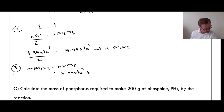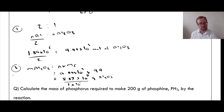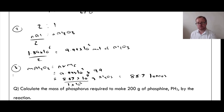Convert to mass using M = N × Mr: 9.44 × 10⁵ multiplied by the Mr of aluminium oxide, which is 102 (giving approximately 94 when written), equals 8.87 × 10⁷ grams of aluminium oxide. Converting back to tonnes by dividing by 1 × 10⁶ gives 88.7 tonnes of Al₂O₃.